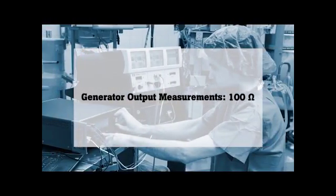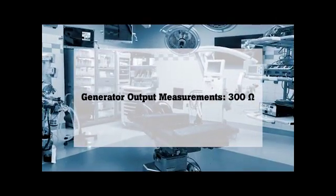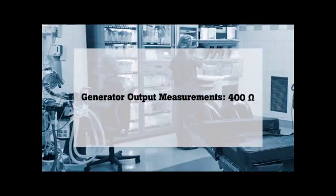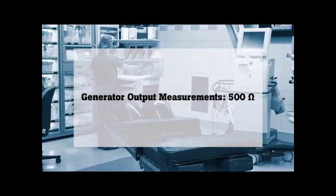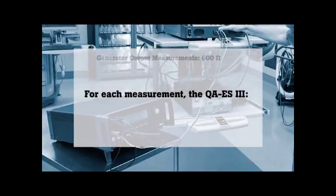The power distribution test makes a series of generator output measurements at different loads from low to high. Measurements begin at the start load resistance and move to the end load resistance at stepped intervals. For each measurement, the QA-ES III